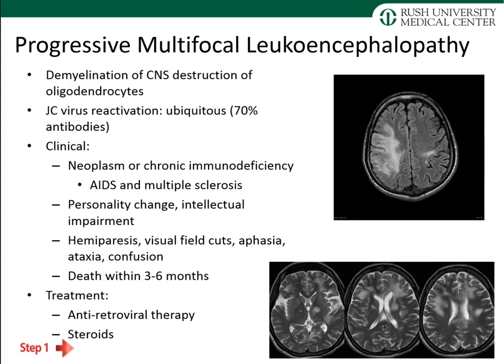Patients with neoplasms or chronic immunodeficiency are at highest risk of PML; we most often see it in AIDS patients or multiple sclerosis patients on immune-modulating medications. Patients present with personality change, intellectual impairment, hemiparesis, visual field cuts, aphasia, ataxia, and confusion — primarily cortical signs. This is an irreversible disorder; death typically occurs within three to six months. Treatment includes antiretroviral therapy in AIDS patients, and steroids are used in others, though long-term benefit is unclear.